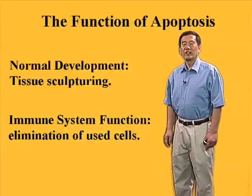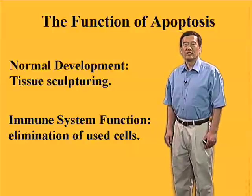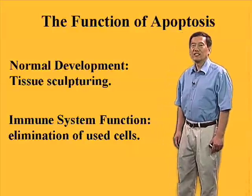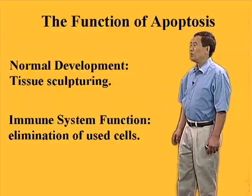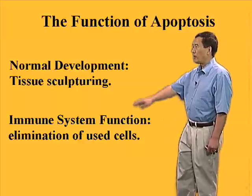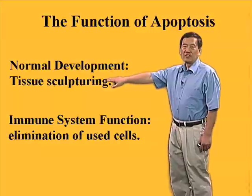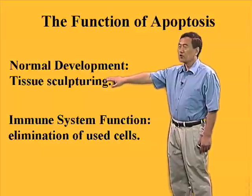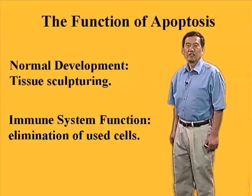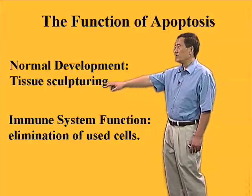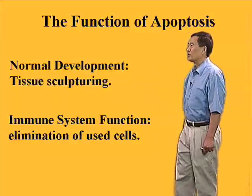Apoptosis actually plays a very important role for the well-being of a whole organism, including us. Here I list several examples of the function of apoptosis. During normal development, apoptosis plays a very critical role in shaping up the shape of our organs and bodies. I'm going to give you a couple more visual examples in the next few slides.